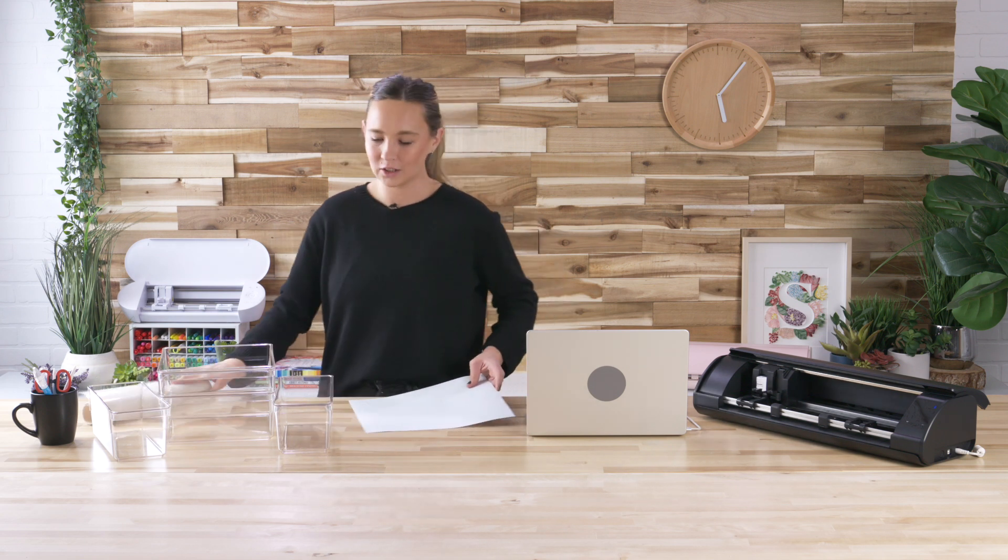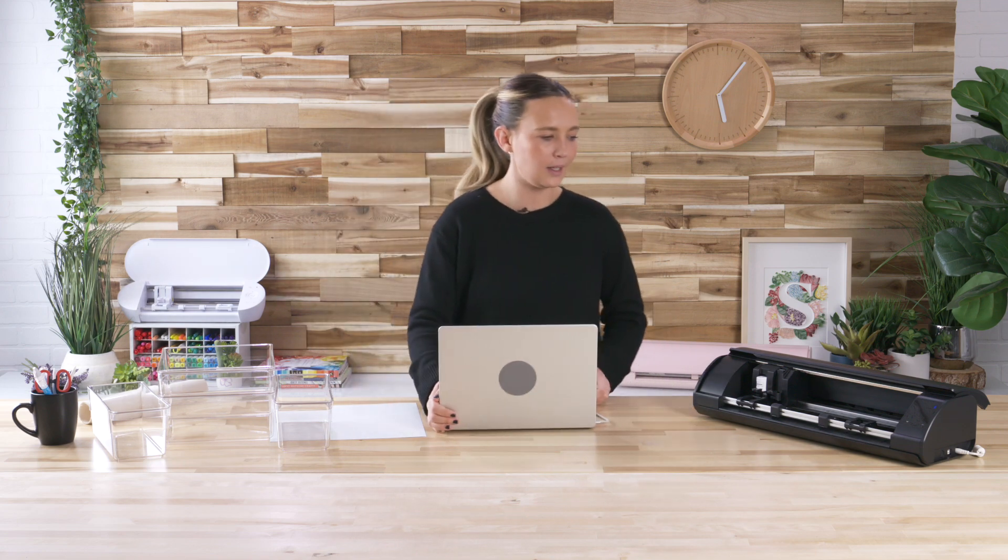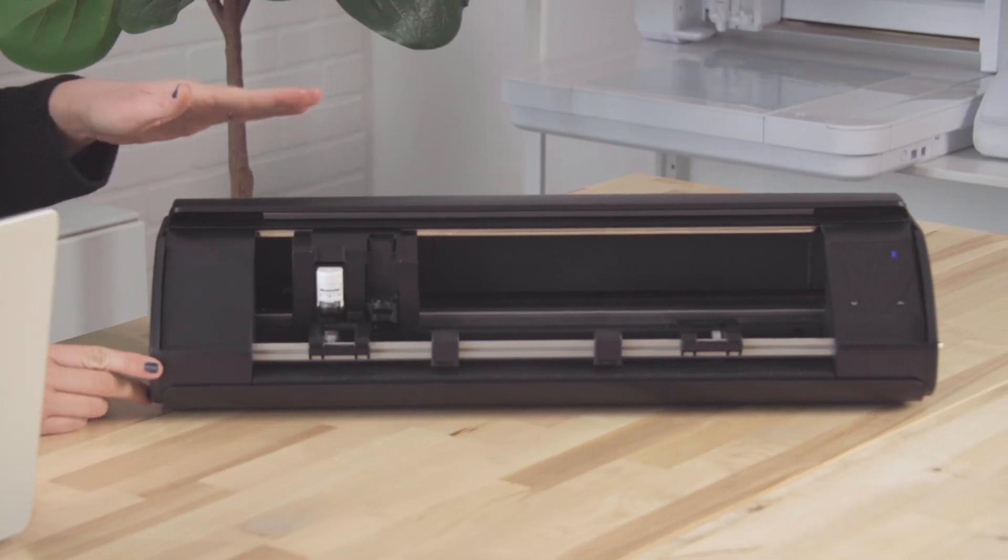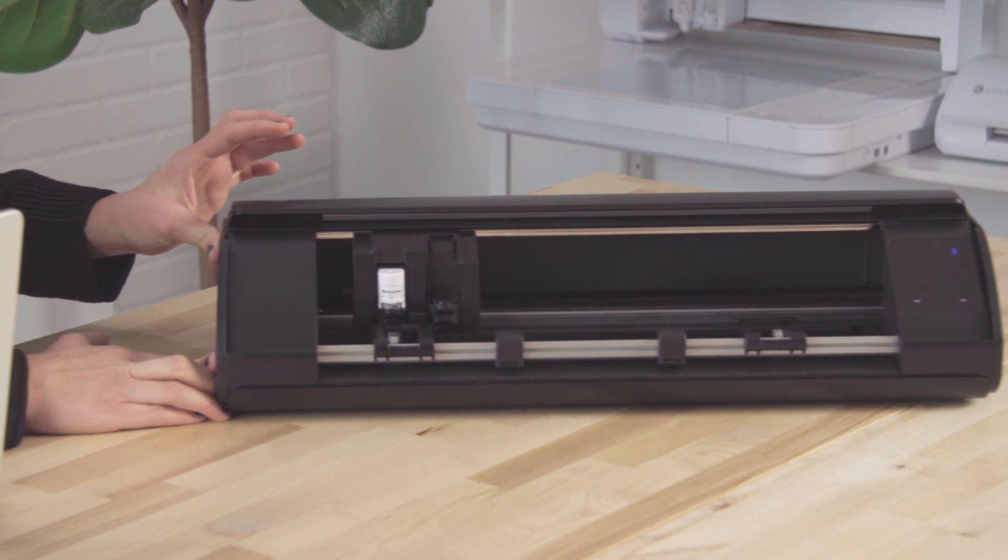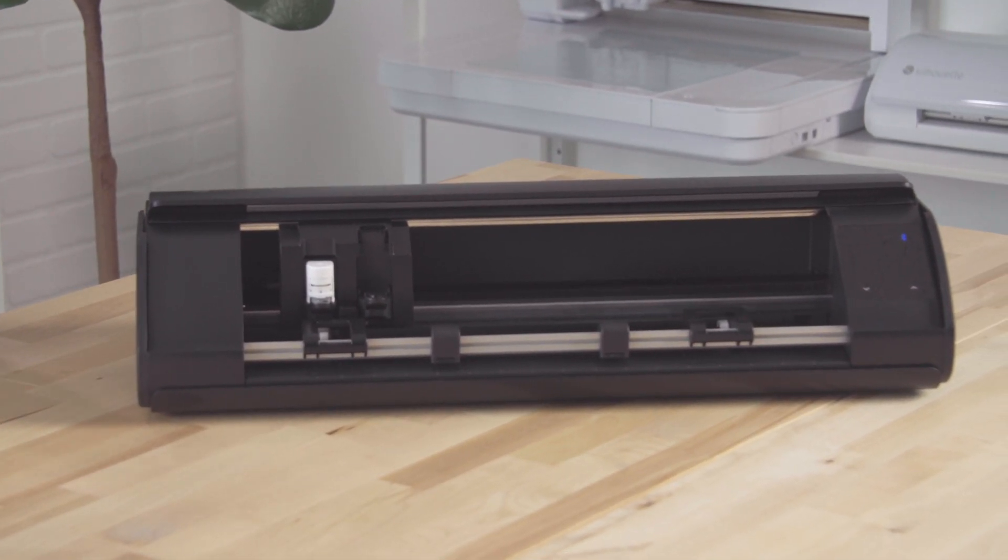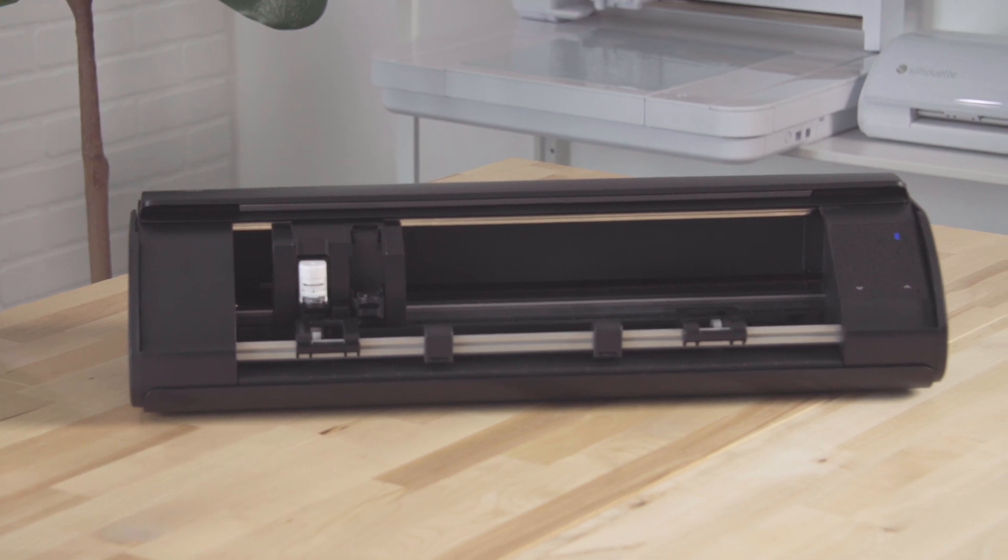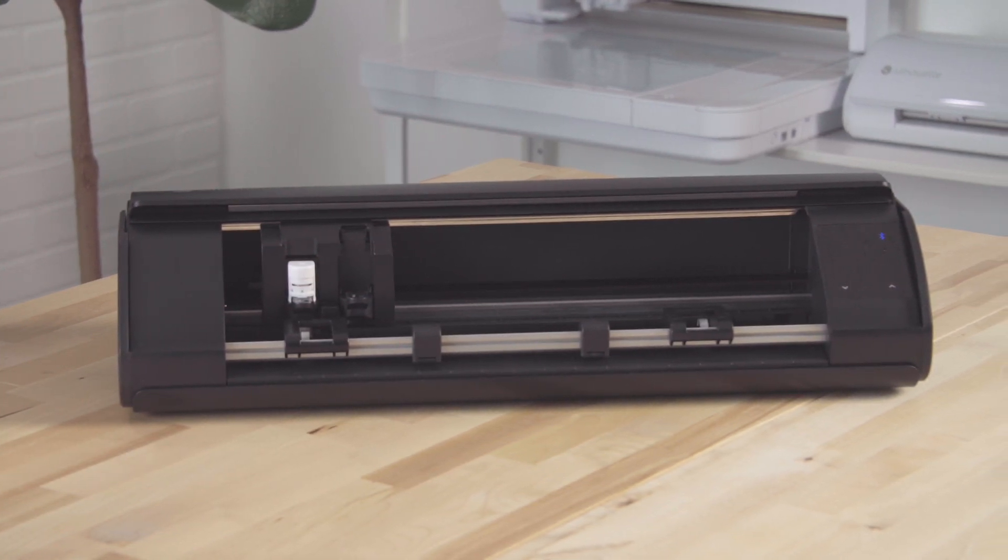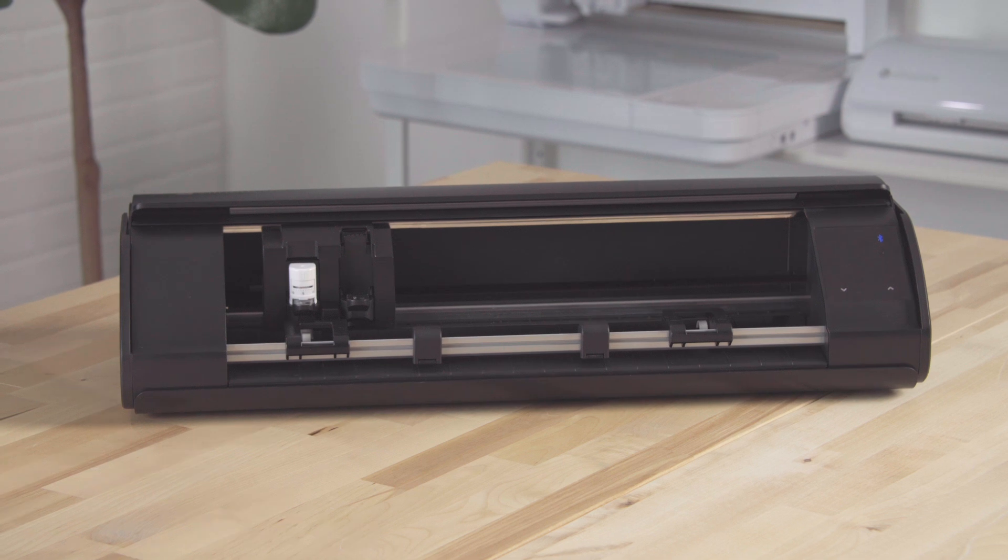And then also our machine that we're going to be using today is the Cameo 5, the all new Cameo 5 machine. You can use whatever silhouette machine you have. But I'm going to be using this all new model today. It's super great, super smooth for matless cutting and everything. And I'm super excited to demo it today for you guys.